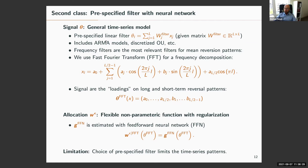ARMA models are just special cases of a specific filter type. Because we care about mean reversion patterns, frequency filters are the natural choice. We propose a fast Fourier transformation of the data — representing data in frequency space, like time series factors of sinus and cosinus functions. The FFT coefficients are our signals, telling us if a residual is more like a long reversal or short-term reversal signal based on the loadings on corresponding sine or cosine components.